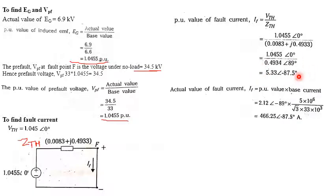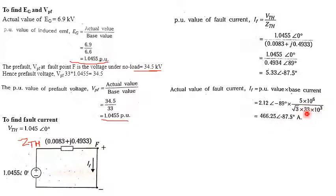To find the actual fault current, we calculate the base current at the fault location on the feeder. Base current = MVA_base / (√3 × kV_base) = 5 / (√3 × 33) = 87.48 A. Multiplying the per-unit fault current by the base current gives the actual fault current as 466.25∠−87.5° amperes. Be very careful to only calculate what is specifically asked in the examination.